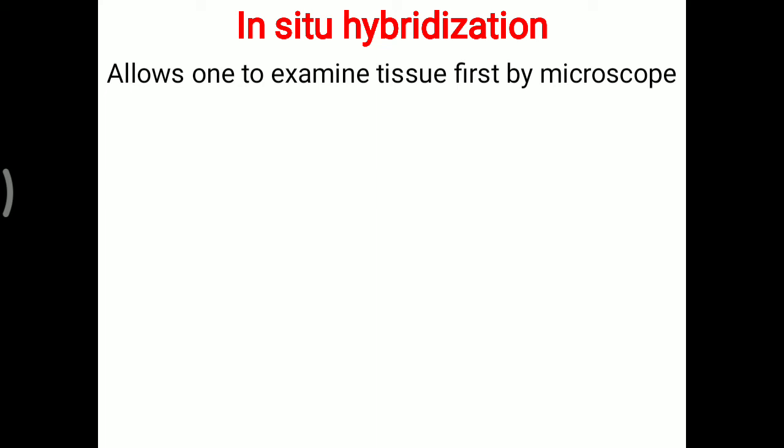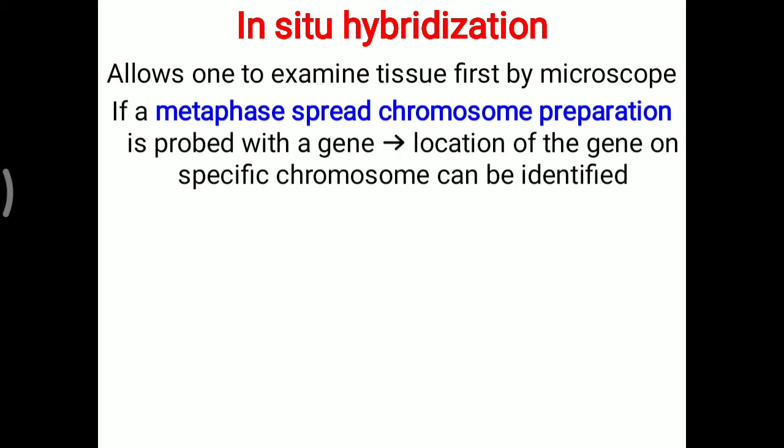This technique allows one to examine tissue under the microscope. A metaphase spread chromosome preparation is done and that is probed with a particular DNA probe. That probe is utilized for the identification or location of a particular gene, so the location of a gene on a specific chromosome can be identified with the help of this in-situ hybridization technique.